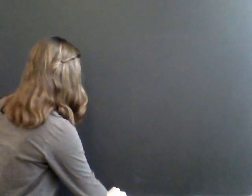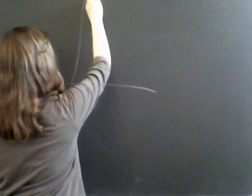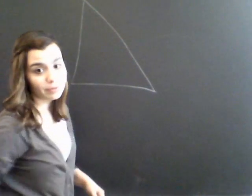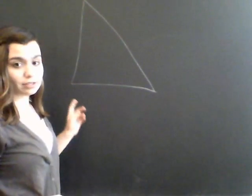The Pythagorean Theorem is basically just a way to figure out the sidelines of a right triangle. Now just to start off, a right triangle is any triangle that has one right angle.